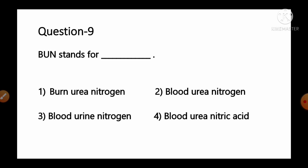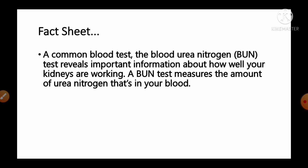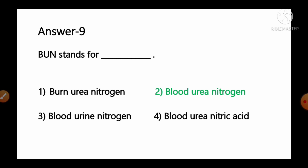Question number 9: BUN stands for — options: 1) blood burn urea nitrogen, 2) blood urea nitrogen, 3) blood urine nitrogen, 4) blood urea nitric acid. BUN is a common blood test that reveals important information about how well your kidneys are working, measuring the amount of urea nitrogen present in your blood. So option number 2, blood urea nitrogen, is the correct answer.